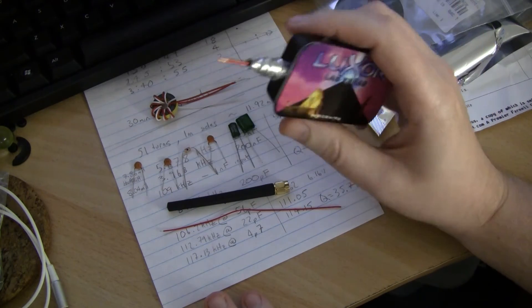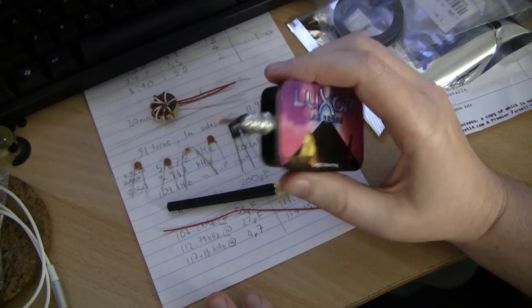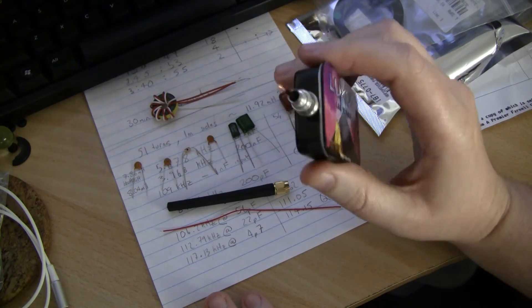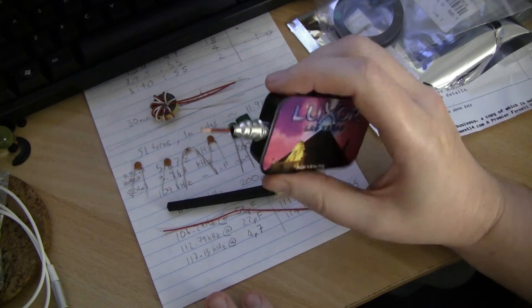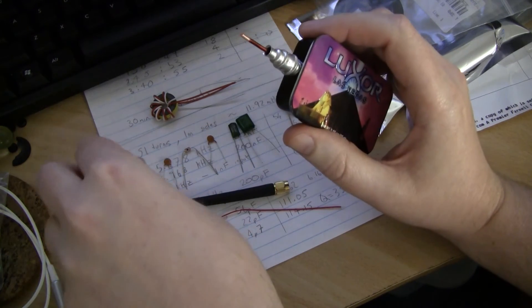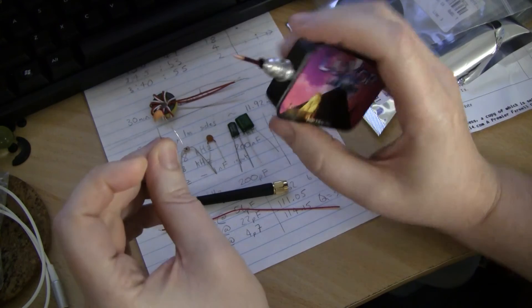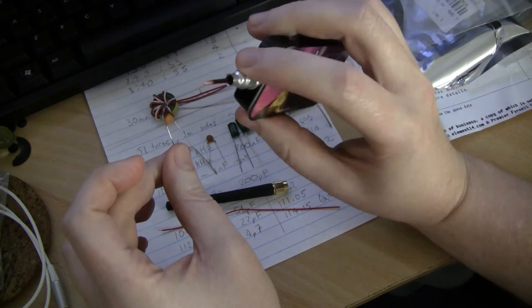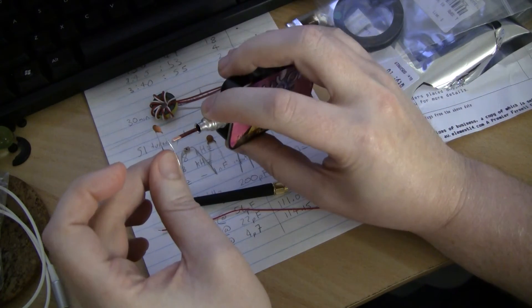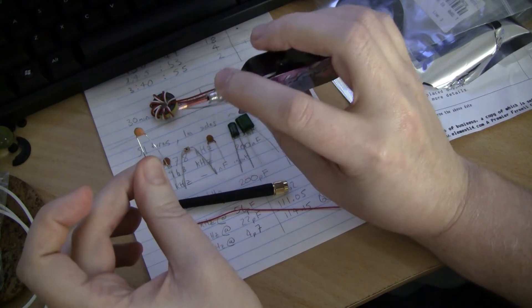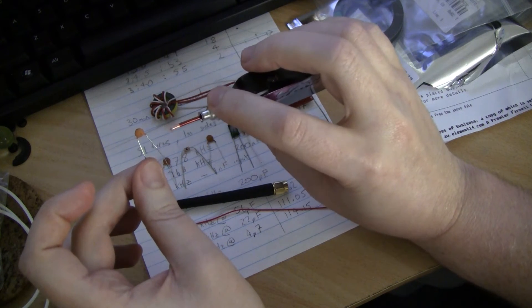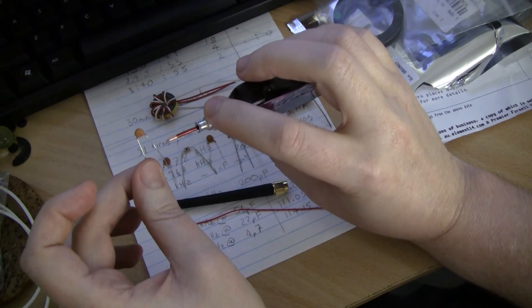The really cool thing about it is that unlike most test equipment, you can use your body as the other connector. So you obviously need two contacts to test something, but with this you only need one. Let's start here with a one picofarad capacitor. I'm going to just hold the tin to complete the circuit.